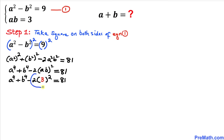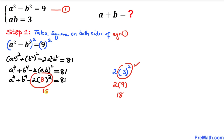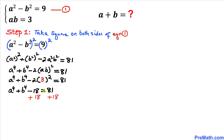Now let's focus on the part 2 times 3 squared. We take care of the exponent first: 3 squared is 9, and 2 times 9 is 18. So we replace that whole term with 18, giving us a to the power 4 plus b to the power 4 minus 18 equals 81. Adding 18 to both sides gives us a⁴ plus b⁴ equals 99.